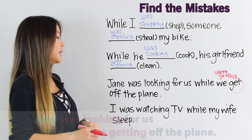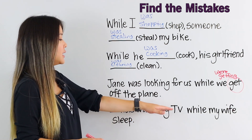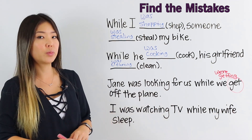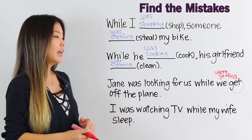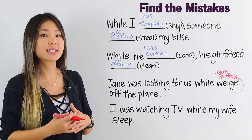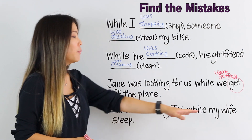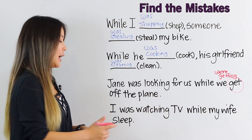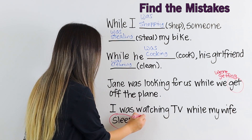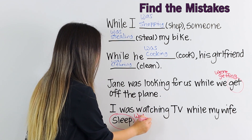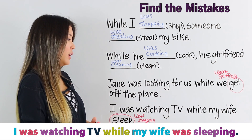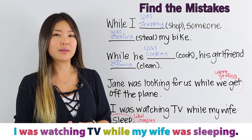The next sentence says: I was watching TV while my wife sleep. Again, this part of the sentence did not use the past continuous tense. My wife is a she, and so I need to say was sleeping. I was watching TV while my wife was sleeping.